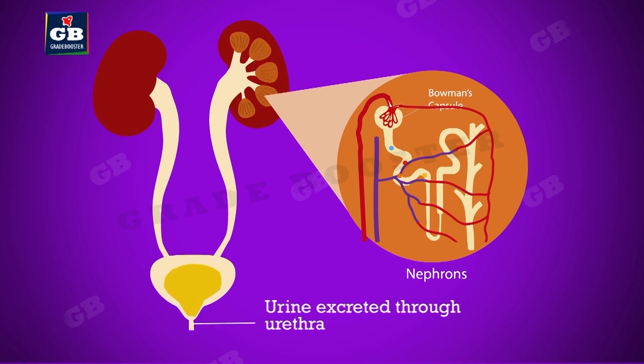Once the bladder is full, it triggers the sensation of urination. When we relax the muscles of the urinary bladder, the urine flows out through the urethra. These are the important points of this life process.